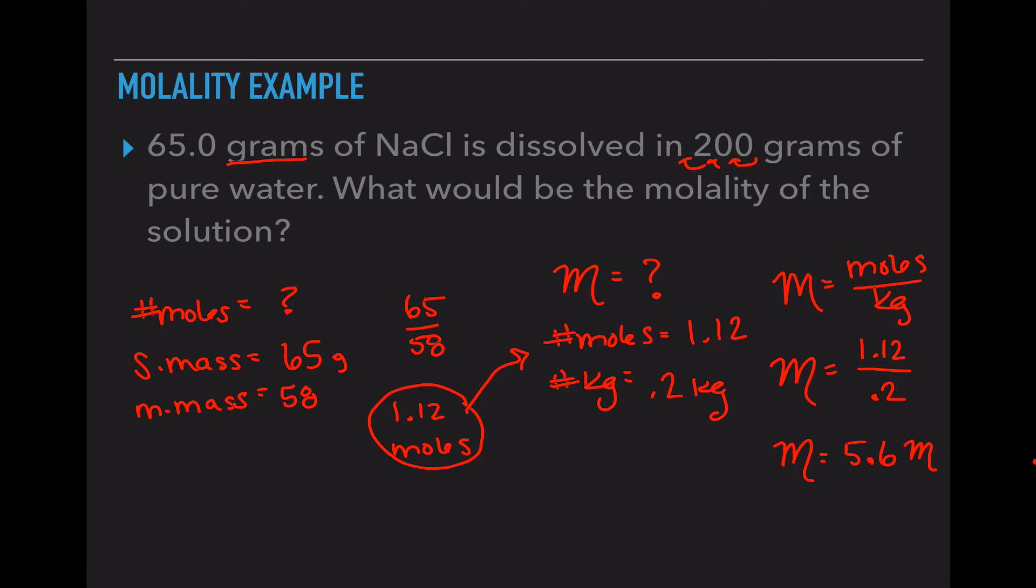So molarity is number of moles divided by liters. Molality is number of moles divided by kilograms. Again, if you don't know the number of moles, you may have to do this beginning step first in order to find the second step, or you may have to do it to find your final answer if they ask for the amount of grams.